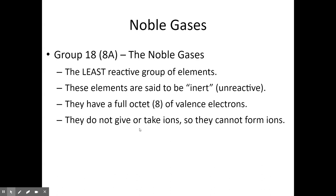The last group is Group 18 — the noble gases. They are totally inert, meaning they do not react, because they already have a full valence shell of 8 valence electrons. They will not give or take electrons to form ions, and they do not covalently bond either. It takes a lot of energy to get them to do anything, but they do make really nice gas lamps — as in neon signs.